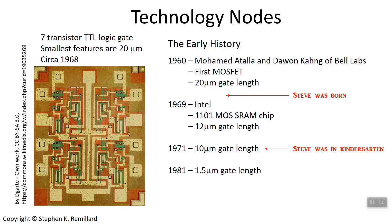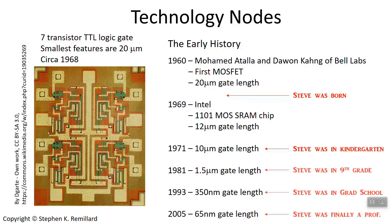In 1981, the industry was down to 1.5 micron gate lengths. By 1993, it was 350 nanometers, and by 2005, it was 65 nanometers.